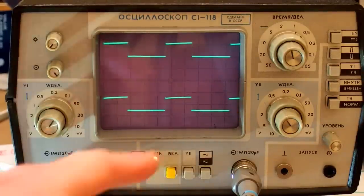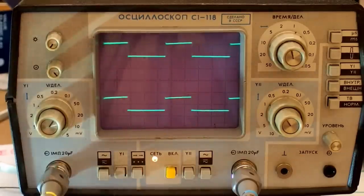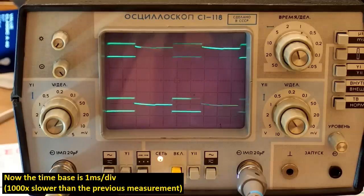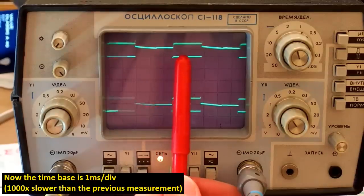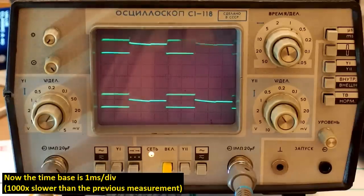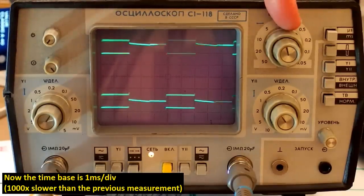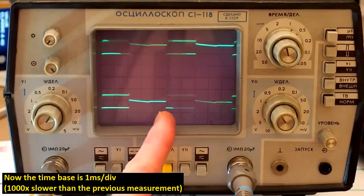And of course the lower the input voltage, the longer is the on time to compensate for it. Now it's the low power setting and here you can see that here it's switching for some time and then it's not switching. Now the time base is one millisecond per division and the period is about five divisions, which is about five milliseconds. So the modulation frequency is about 200 hertz.